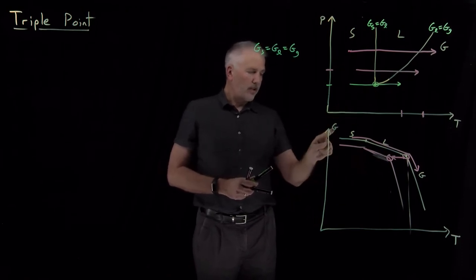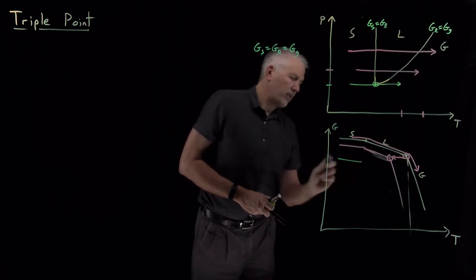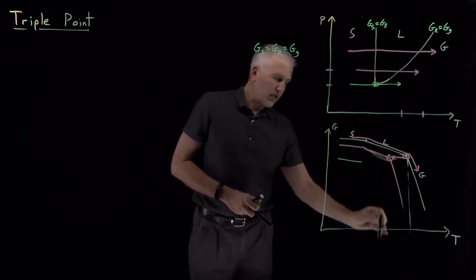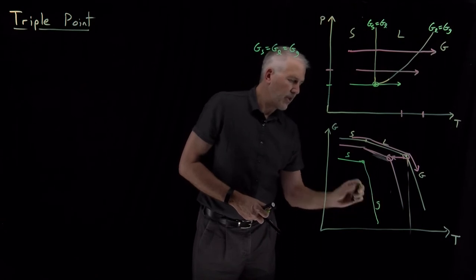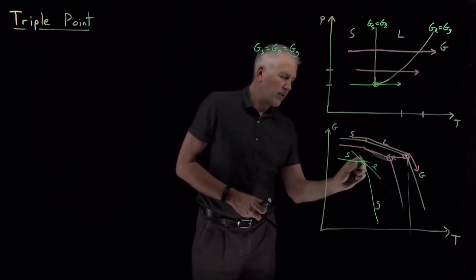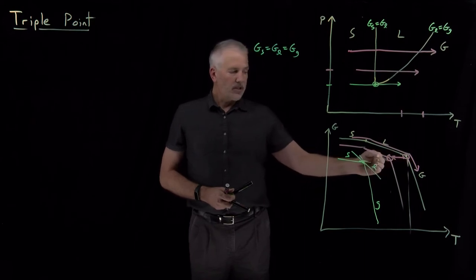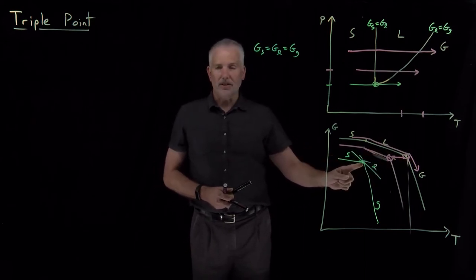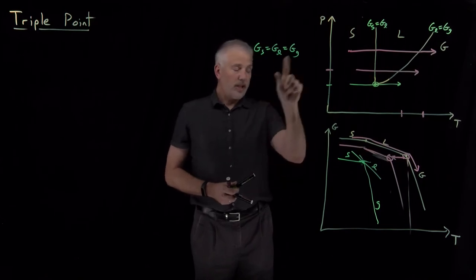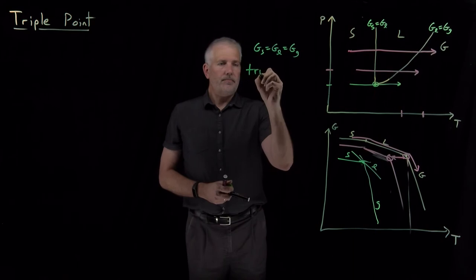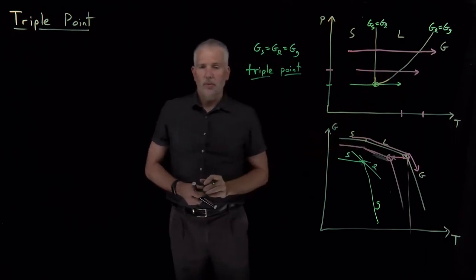If we draw what that looks like on a free energy diagram, we've lowered the pressure further, so these curves have dropped even more. The gas curve in particular has dropped all the way down to the point where it now intersects the solid curve, and all those curves cross at one point. Instead of having two different phase transition temperatures, the vaporization temperature has continued to decrease down to the point where it matches the melting point. So the melting point and the boiling point are occurring at the same point — solid, liquid, and gas phases all coexist with each other. That point is called the triple point.